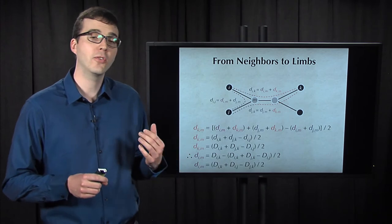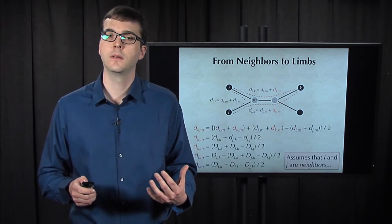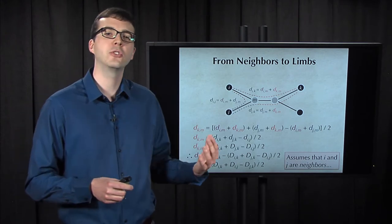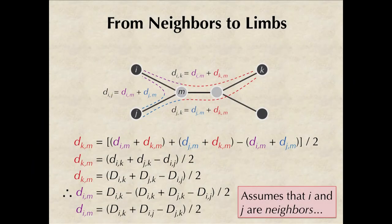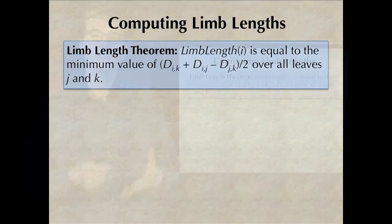Now, we found a formula for the length of a limb in the previous section. But that was assuming that I and J were neighbors. However, this formula is at least in the ballpark. To compute the limb length of I, we will need to take the minimum value of this expression as we let J and K range over all leaves of the tree. If you're interested in seeing a proof of this theorem, just see the main text.